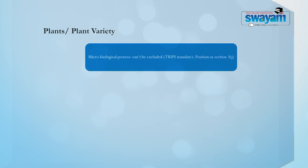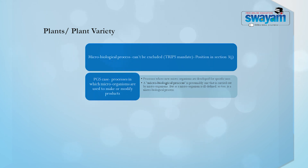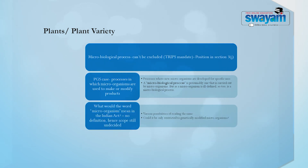Microbiological processes cannot be excluded, and this is the position in the TRIPS mandate as we shall see, and also the position in Indian law. In the Plant Genetic Systems case, a process in which microorganisms are used to make or modify plants, or where new microorganisms are developed for specific uses, is a microbiological process. What is a microbiological process? A microbiological process is presumably one that is carried out by microorganisms, but as microorganism is ill-defined, so too is a microbiological process. What would the word microorganism mean in the context of the Indian Act is yet to be determined — there is no definition, and hence there is still a lot of scope for deciding, whether it is restricted only to genetically modified organisms or microorganisms more broadly.